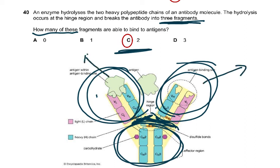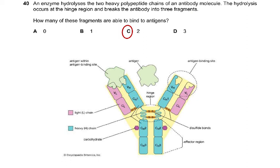The antigen-binding sites are on two of the three fragments — so the answer is two. Please understand the structure of an antibody: we have the heavy chain and the light chain. Antibodies are globular proteins and glycoproteins because they have a carbohydrate component. Disulfide bonds join the heavy chain with the light chain, heavy with heavy, and heavy with light. Please pause and revise the antibody molecule structure. That finishes this paper — please do the entire paper on your own first, then go through this video to identify any unclear areas. Thank you very much.